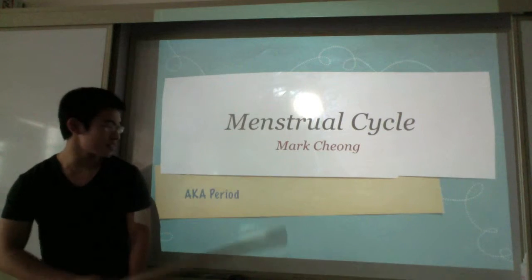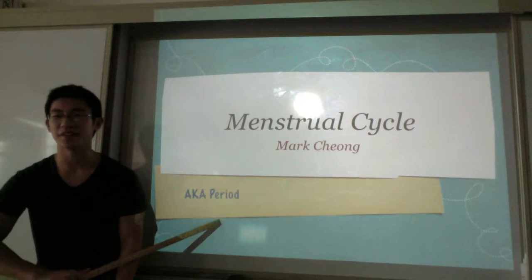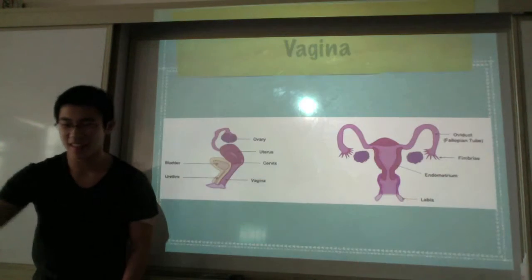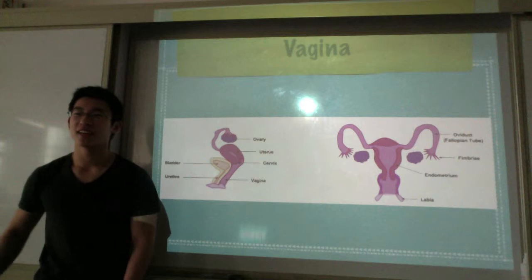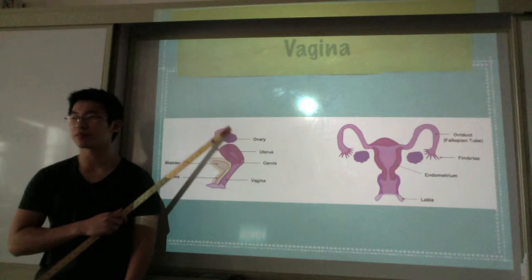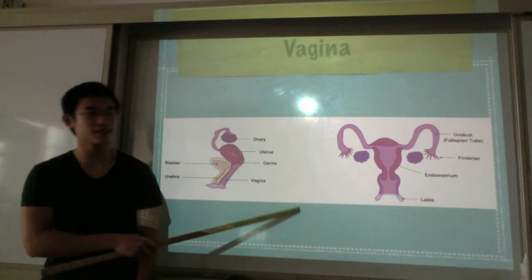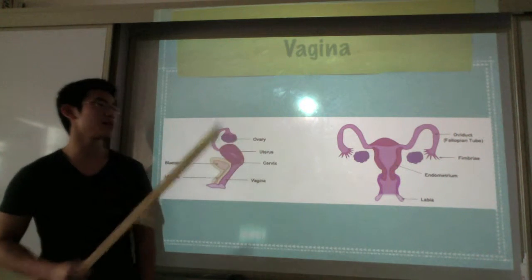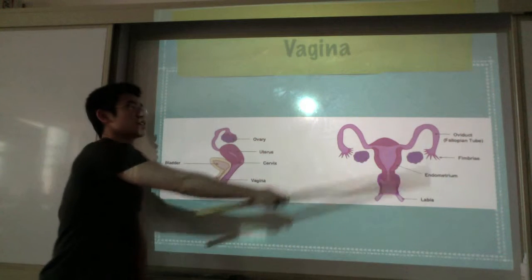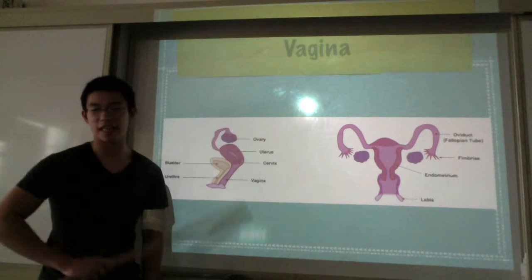As everyone knows, it's also called the period. This is part of the reproductive system of females, where it mostly just occurs in the vagina.